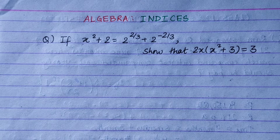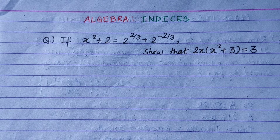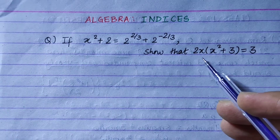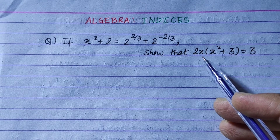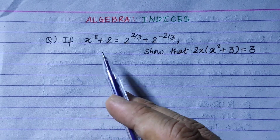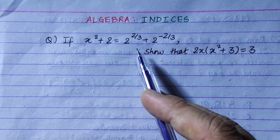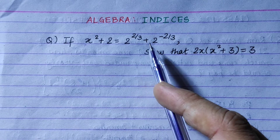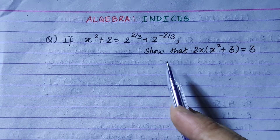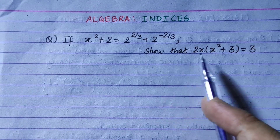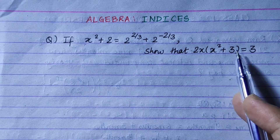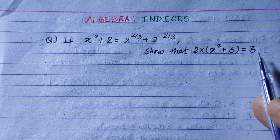Hi everyone. Today we have an important question for algebra. If x squared plus 2 is equal to 2 to the power 2/3 plus 2 to the power minus 2/3, show that 2x bracket x squared plus 3 bracket close equals 3.